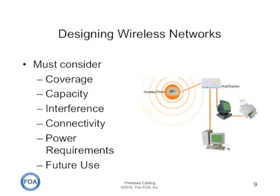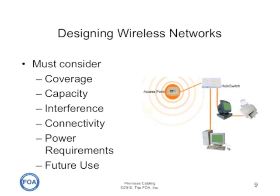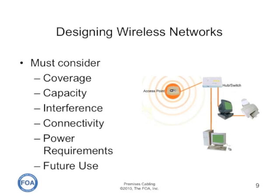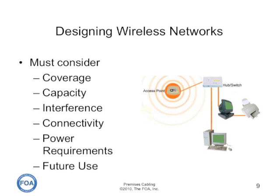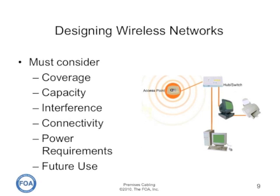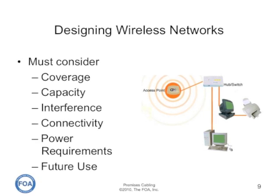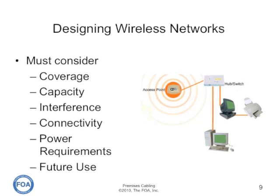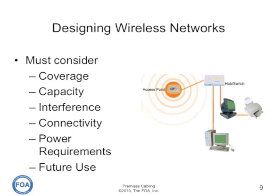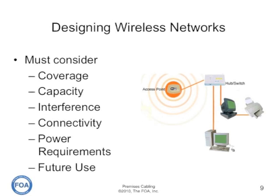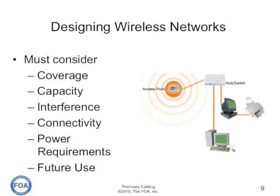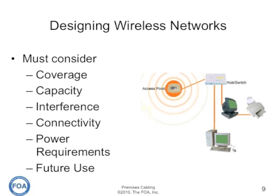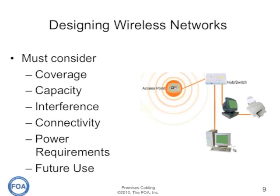When designing a wireless network, there are a lot of factors to consider. For example, coverage: how much area may be covered by wireless and how many access points will be required? How many users will be using the capacity of a single access point? Are there any sources of interference? How will the access point be connected into the cabling system? How will power be supplied to it? And are there any future use issues that may need to be considered?